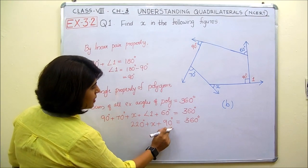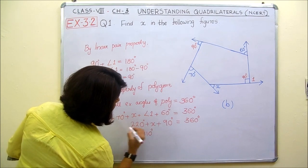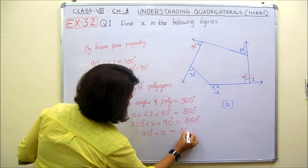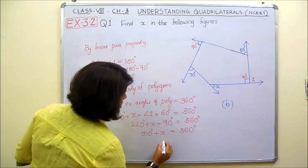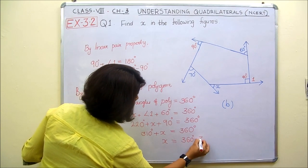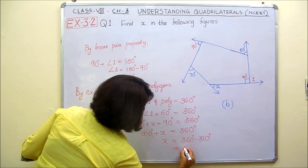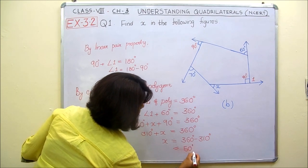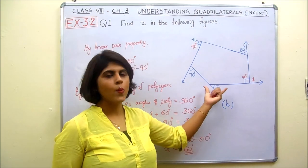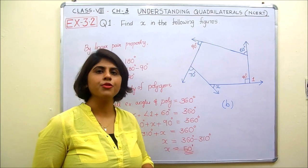Now 220 plus 90 degrees is 310 degrees, so 310 degrees plus X equals 360 degrees. Therefore, X equals 360 degrees minus 310 degrees, which is X equals 50 degrees. So we got the value of the exterior angle X, that is X equals 50 degrees.